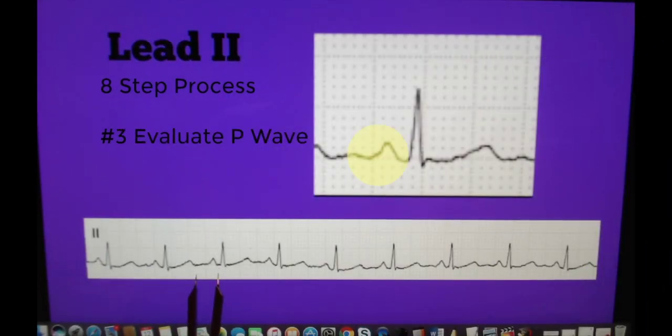In step three we are now evaluating the P wave. We want to look at all of the P waves in our six second strip. And here we see that they are round, upright, and they do come before a QRS complex.